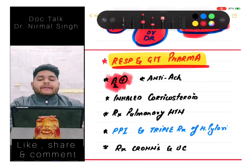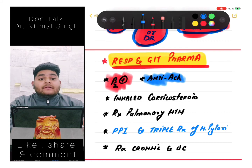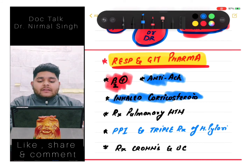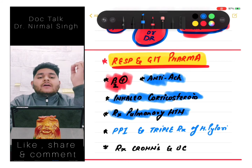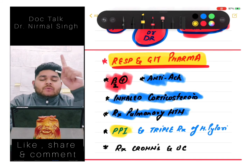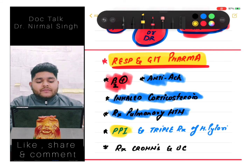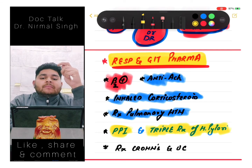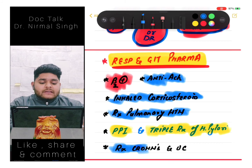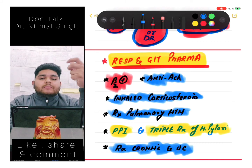In respiratory and GIT pharma, we should know about beta-2 agonists, anti-acetylcholinergics, and inhaled corticosteroids. Then treatment of pulmonary hypertension - this is a very important topic from which questions frequently come. Then PPI (proton pump inhibitors) - mechanism of action and which diseases they are the drug of choice for. Then triple treatment of H. pylori - two antibiotics plus one PPI. Also, treatment of Crohn's disease and ulcerative colitis, which have different drug treatments.